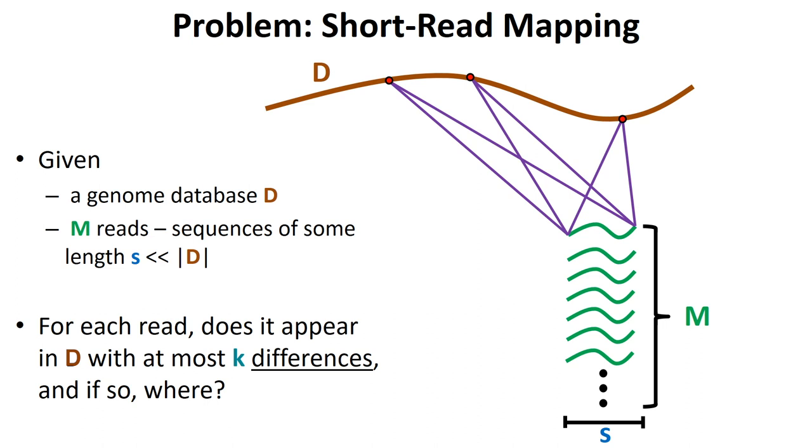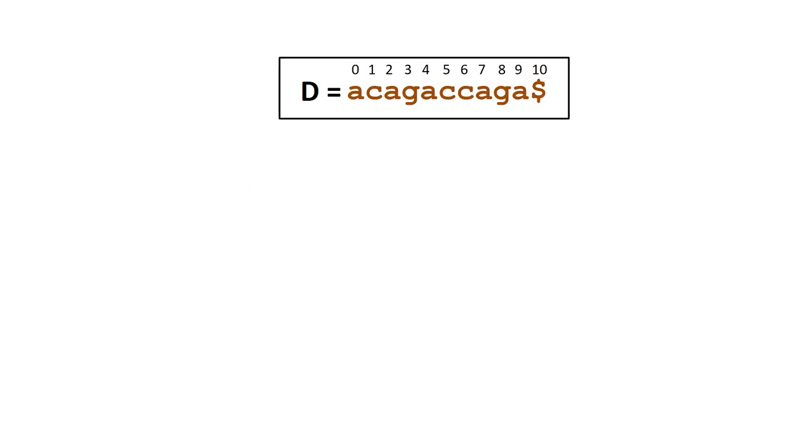We will use a simple example to illustrate how to construct a suffix tree. Our database consists of a sequence of DNA with 10 nucleotides. We will first specify the position of each base in the sequence starting from position 0. The dollar sign at position 10 denotes the end of the sequence.